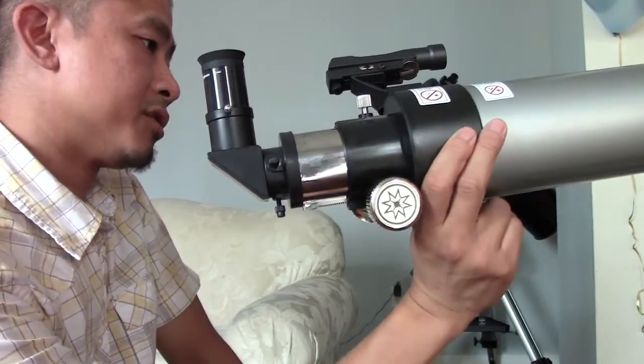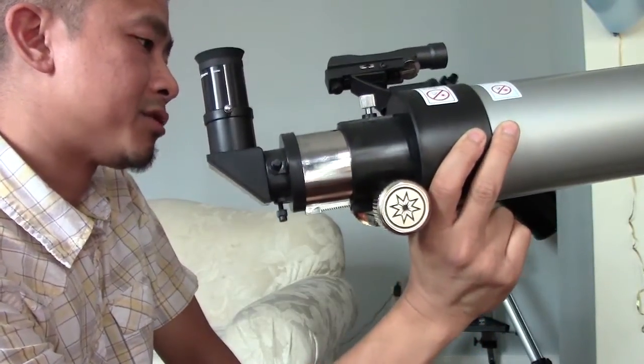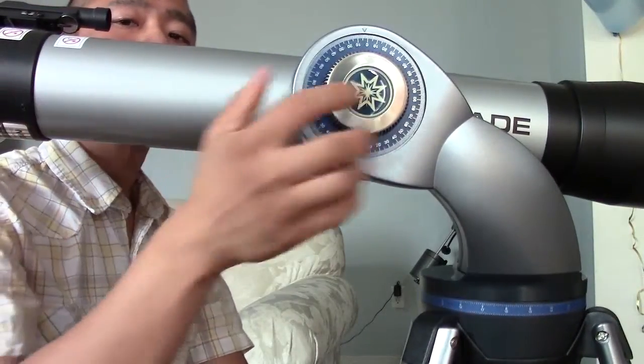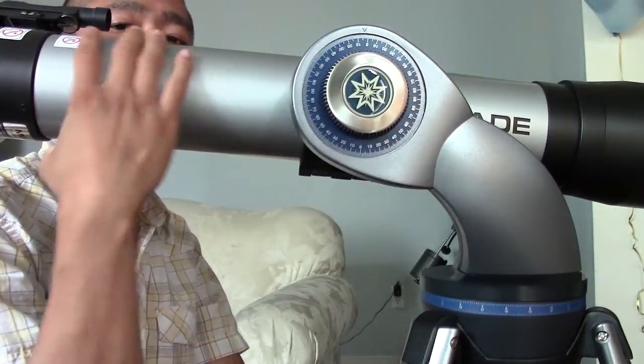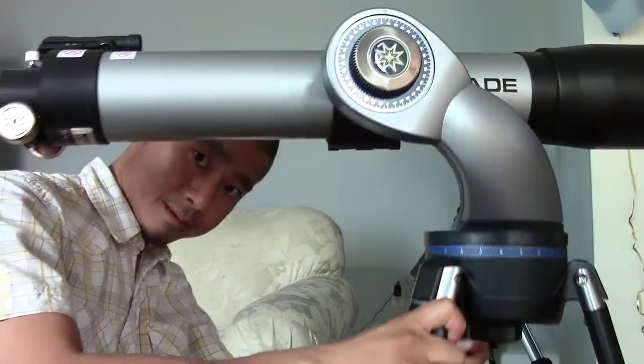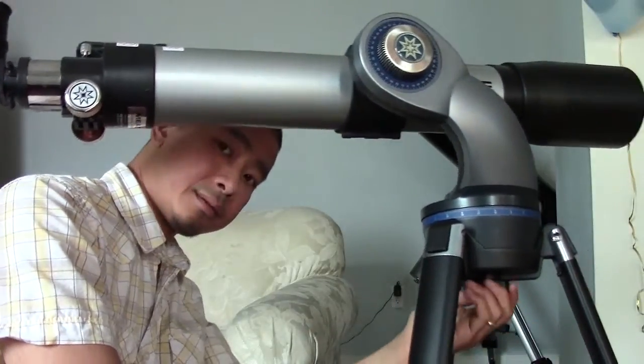Now when you're slewing it around, make sure that these adjustment screws are loose. This would be your adjustment for your altitude, and down here is your azimuth.